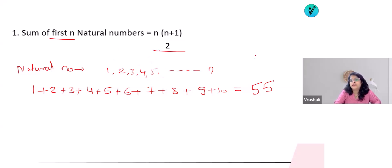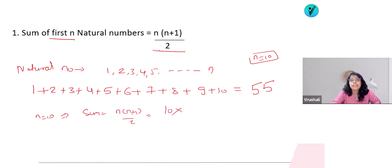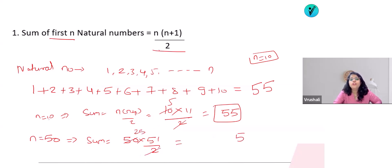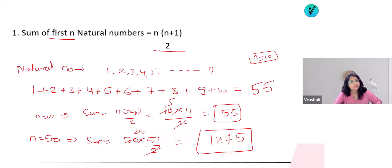When n equals 10, the sum formula is n(n+1)/2. For 10 numbers: 10 × 11 / 2 = 55. So for the sum of the first 50 natural numbers, sum = 50 × 51 / 2 = 1275. This is the simple formula for the sum of first n natural numbers.